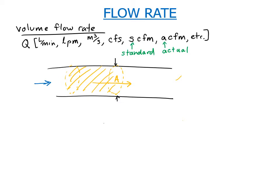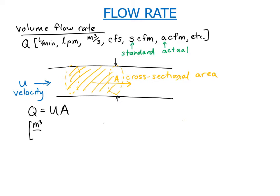We're going to call this the velocity u, and then we have A, which is the cross-sectional area. We can see that the volume flow rate Q is equal to u times A. Looking at the units: Q is a volume flow rate, so it's cubic meters per second; u is a velocity in meters per second; and A is our area in meters squared. So you can see the units work out.